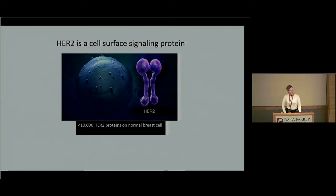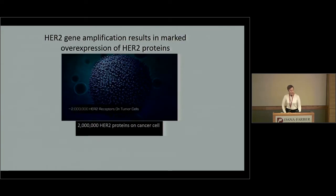But when we look at a HER2 gene amplification — a cell that is HER2 gene amplified with overexpression of HER2 proteins — this artist's rendition gives us a sense that these cells have as many as 2 million or more HER2 proteins on the cancer cell. So they have many, many of these molecules.